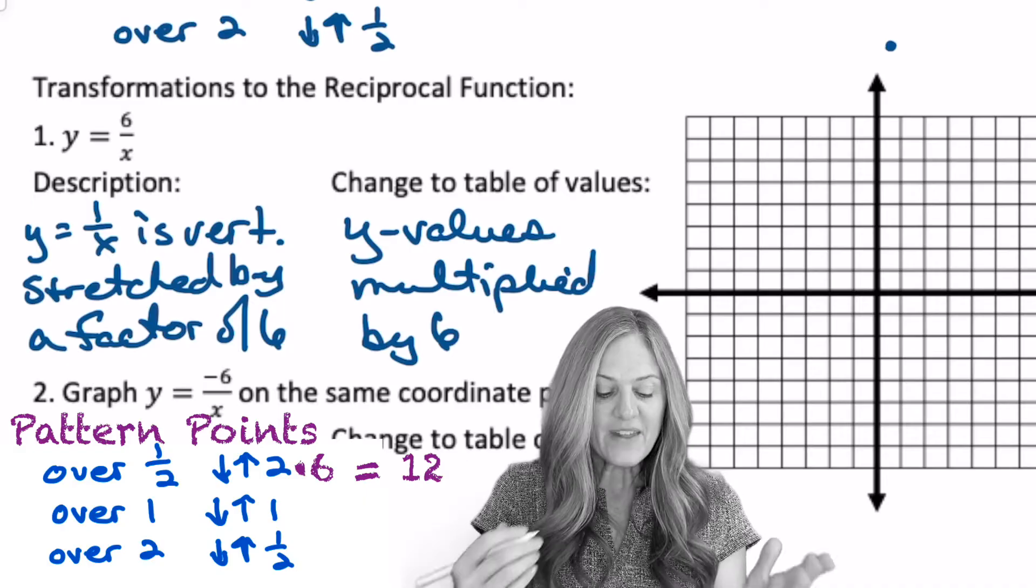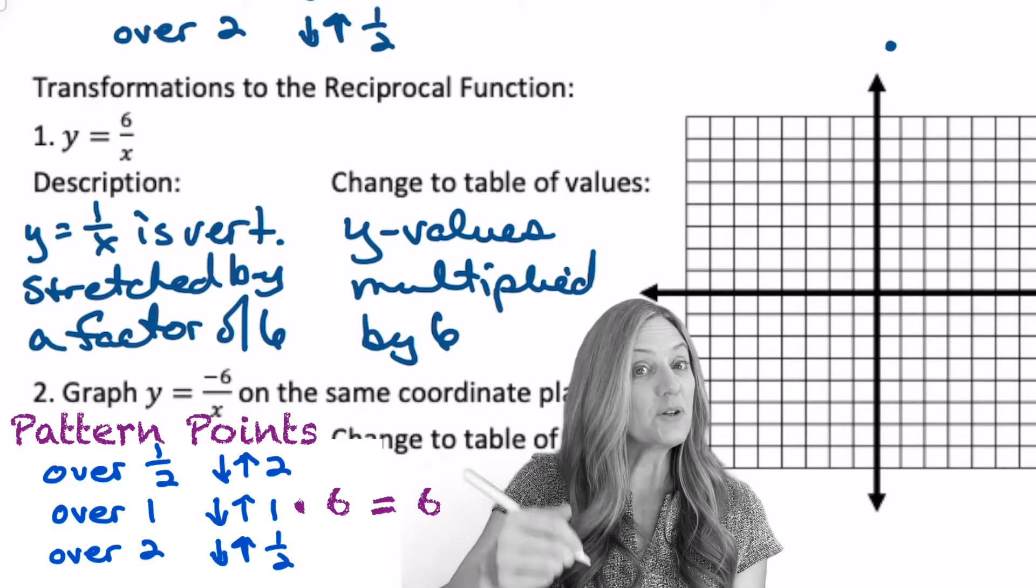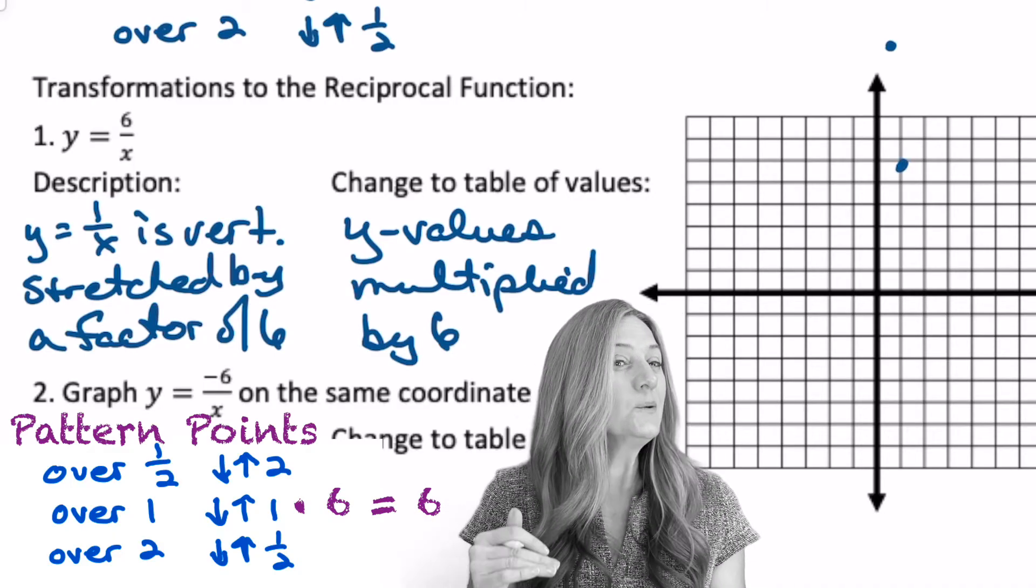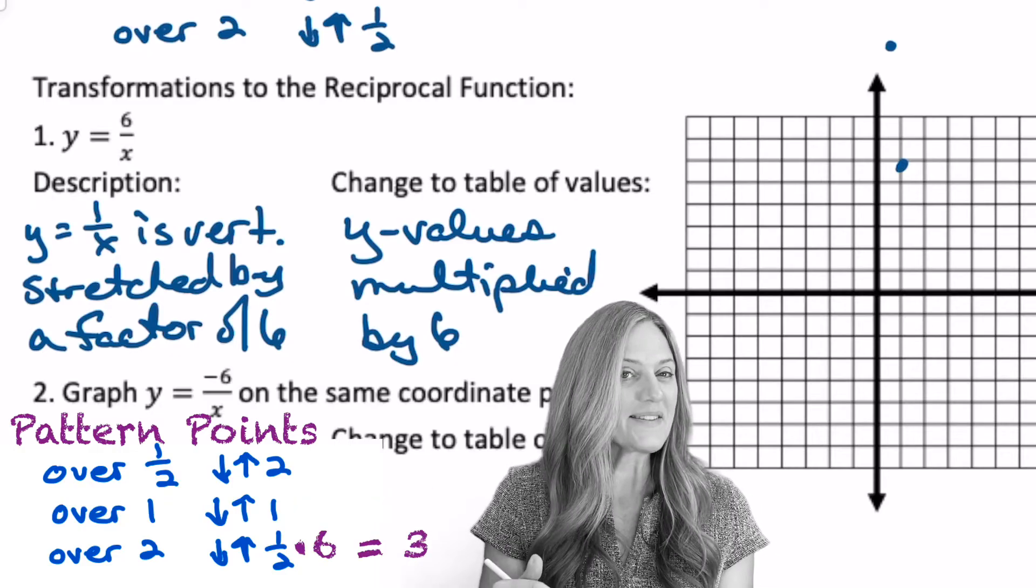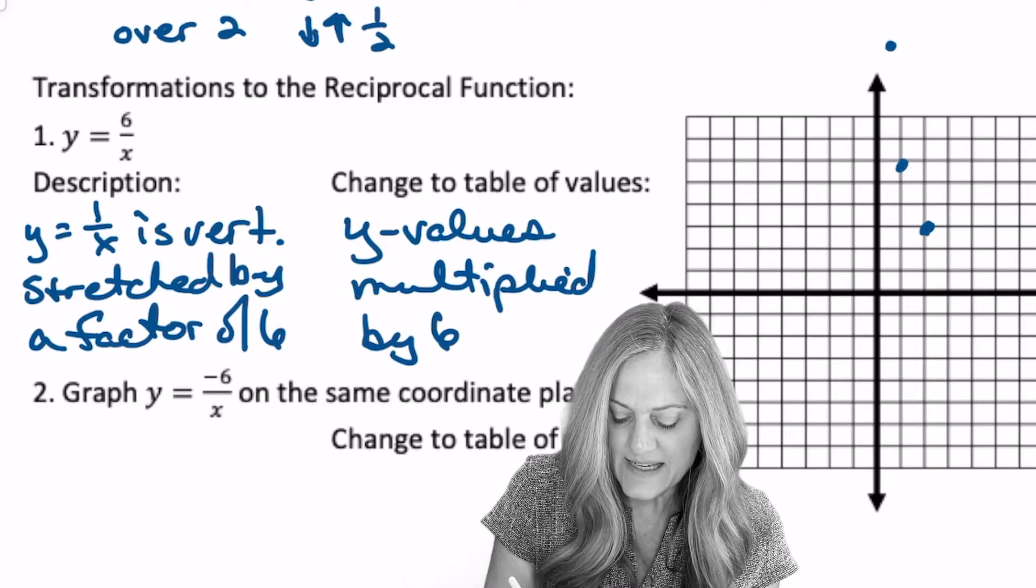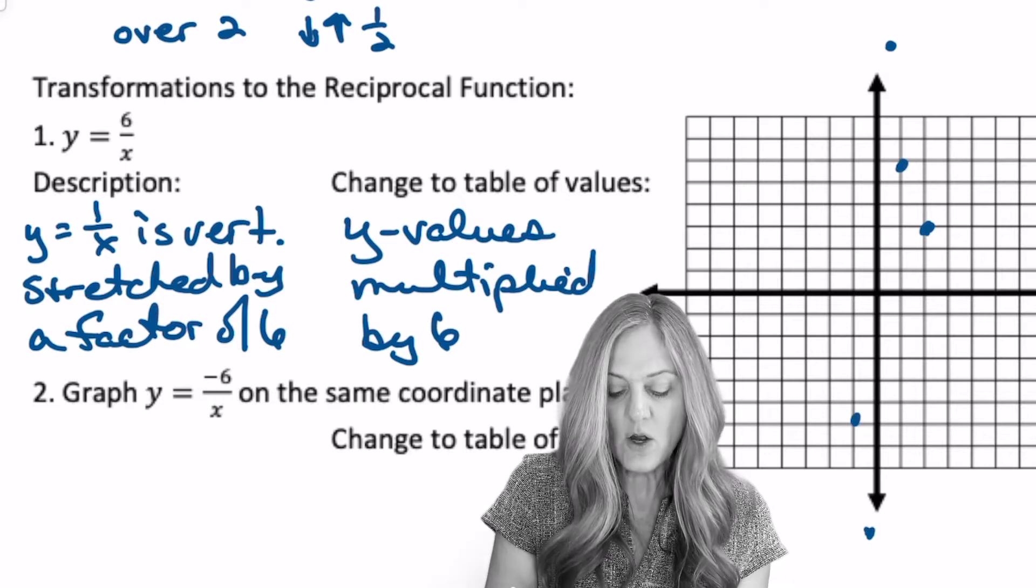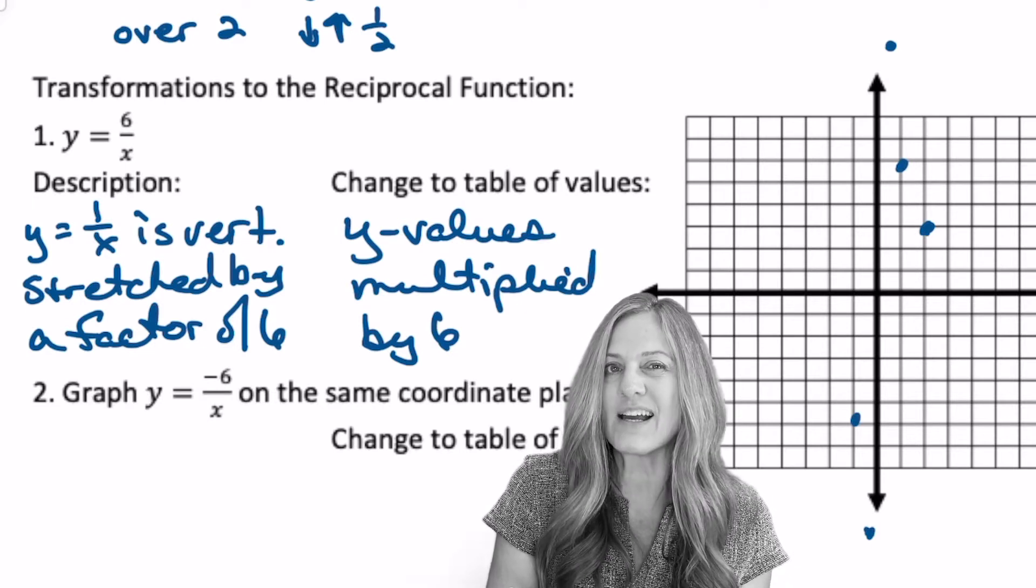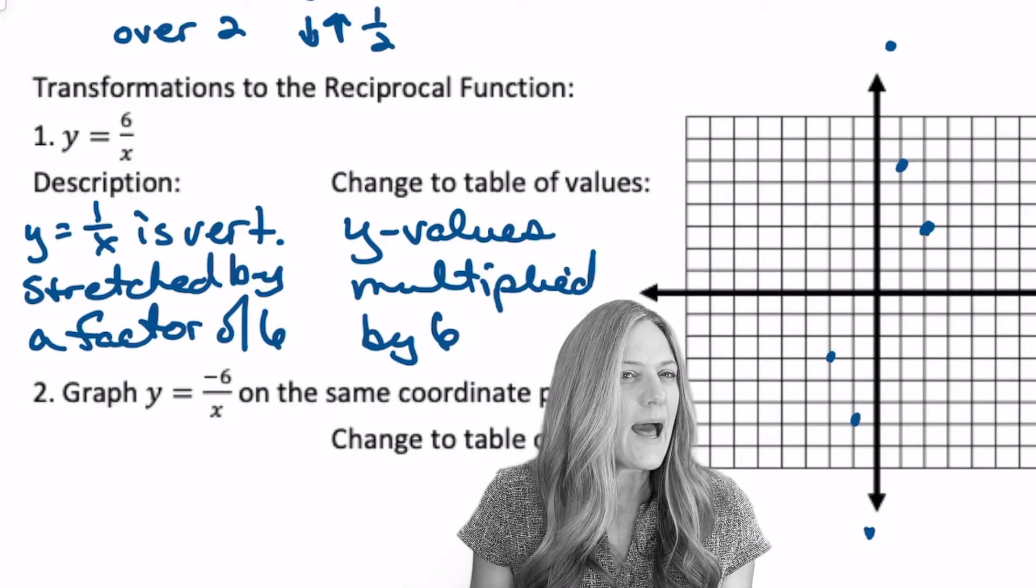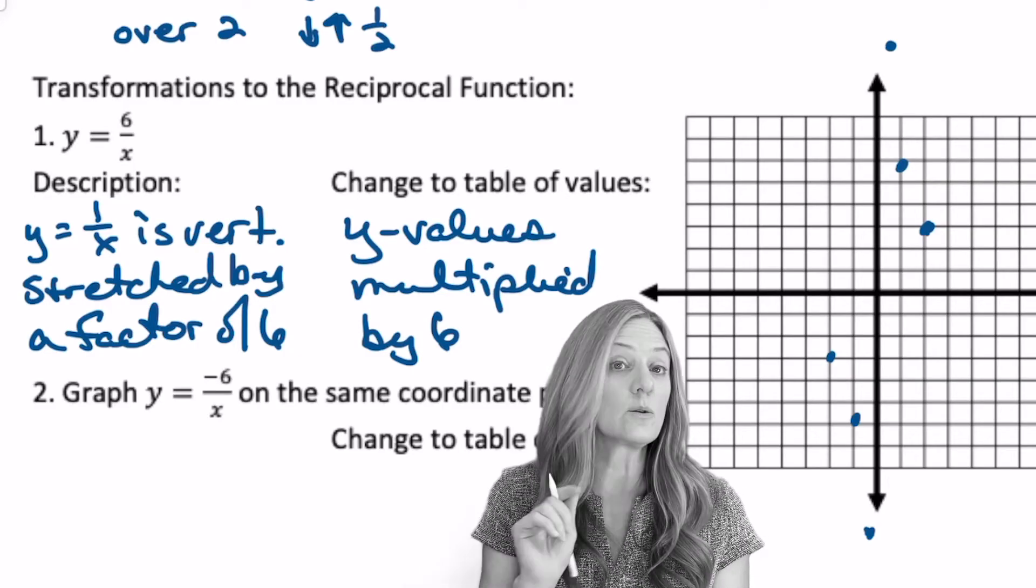Let's try the next one. I would go over 1, up 1. But now I'm going to multiply by 6. So over 1, up 6. And then when I go over 2, normally up a half, multiply by 6, I'll go up 3. Now let's do that on the other side. So over a half, down 12. Over 1, down 6. And over 2, normally down a half, but half times 6, down 3. What's going to happen here? It's still going to hug the asymptotes, the x and y axis. So let's sketch this.